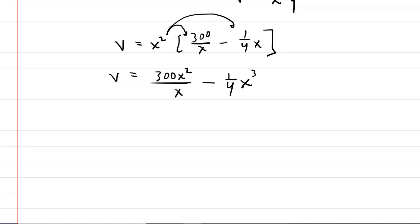So you'll end up with 300 X squared over X minus 1 fourth X cubed. We could simplify this further. A factor of X will cancel here in the denominator and in the numerator. So now we have 300 X minus 1 fourth X cubed.